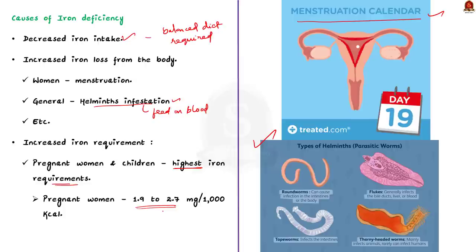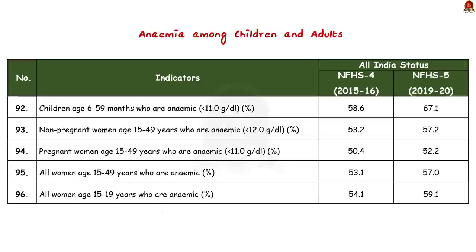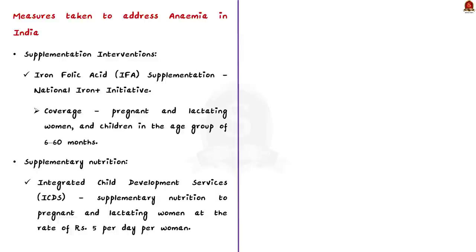Anemia is considered a significant public health challenge in India. Government measures to address it include supplementation interventions by the Ministry of Health and Family Welfare. Supplementation means food supplements — highly concentrated vitamins and minerals in the form of capsules, tablets, or injections. For anemia, iron folic acid (IFA) supplementation is provided through IFA tablets under the National Iron Plus Initiative, which provides supplementation to pregnant and lactating women and children aged 6 to 60 months.